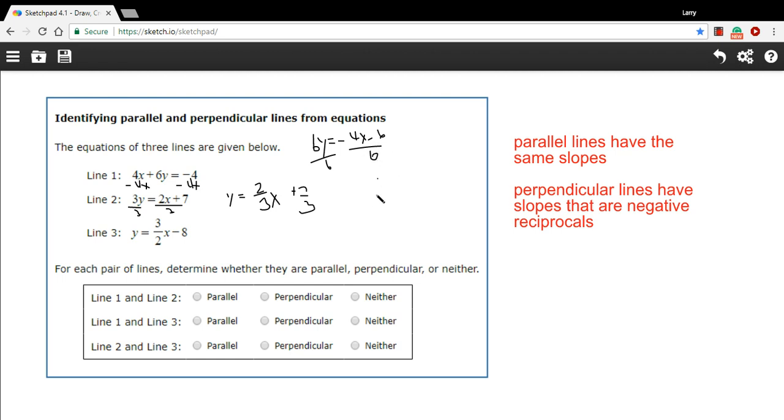And then we're going to divide everything by 6. So we're going to get y equals, so negative 4x over 6. So 4 sixths simplifies to 2 thirds. So this is a negative 2 thirds x minus 6 over 6 is 1.